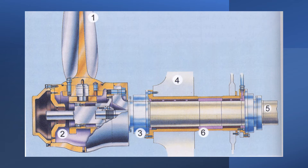Now let's talk about controllable pitch propellers. The blades of this type of propeller can be turned around the blade axis, thereby changing the propeller pitch. These propellers are internally complicated; the mechanism that adjusts the pitch is located in the boss of the propeller. It is activated from the engine room and remotely controlled from the bridge by a hydraulic cylinder. In this diagram: number one is the propeller blade, number two is the boss or hub, number three is the watertight or oil-tight seal between the shaft and propeller, number four is the stern frame, number five is the propeller shaft, and number six is the stern tube.